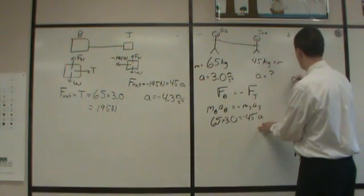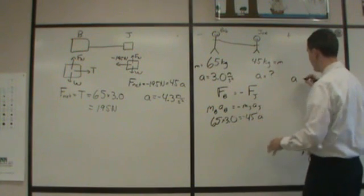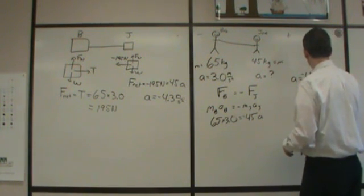In this case, we're finding our acceleration the exact same as before, and this still multiplies to 195, divide it by 45, and again, we'll get a negative 4.3 meters per second squared.